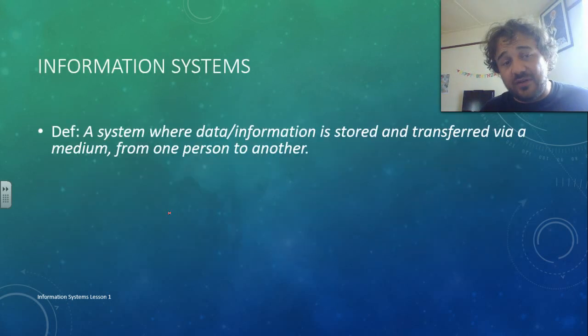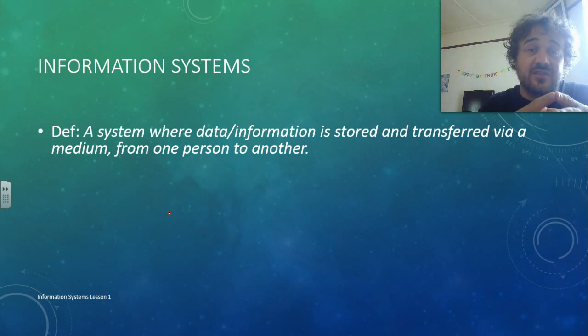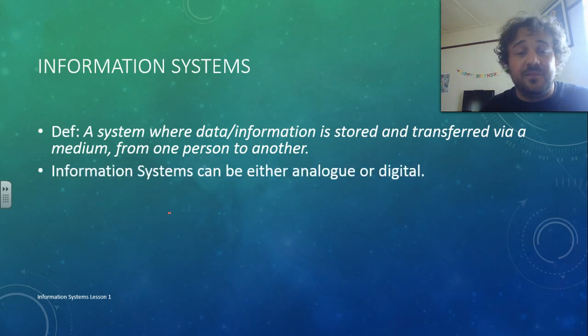Alright, information systems, pretty straight forward, so an information system is somewhere where information is stored and transferred via a medium, whether it's a wave, or it's a CD, or a book, from one person to another, so it's a place where you can store information or store data, and take it to another person.